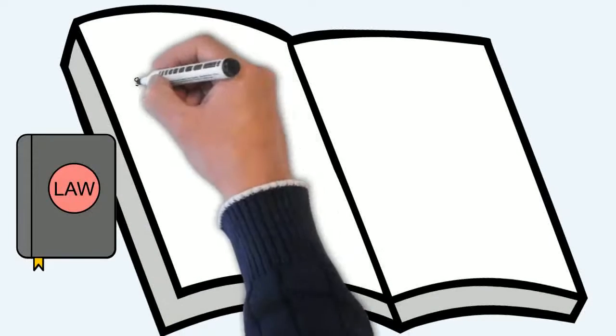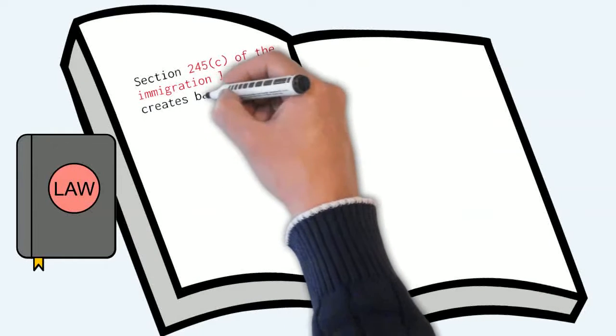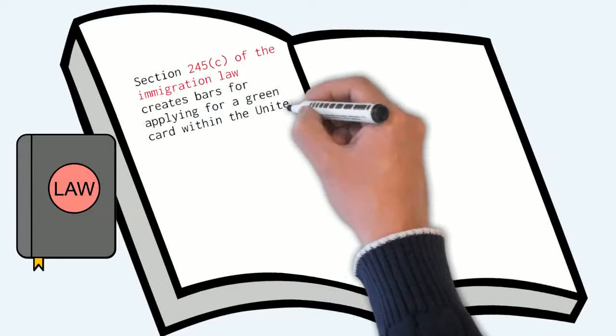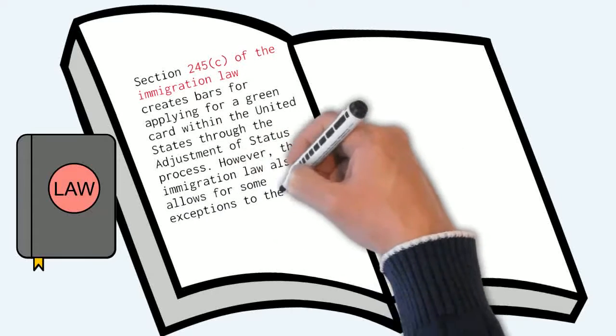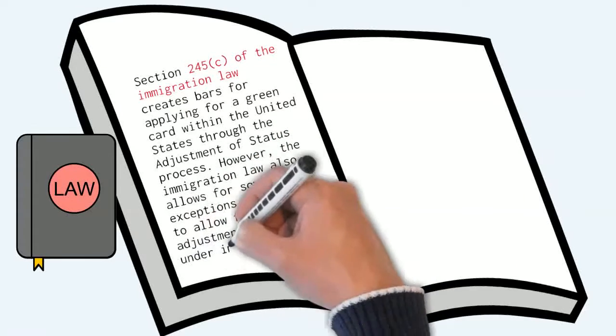Section 245c of the immigration law creates bars for applying for a green card within the United States through the adjustment of status process. However, the immigration law also allows for some exceptions to the bars to allow for adjustment of status under immigration law.